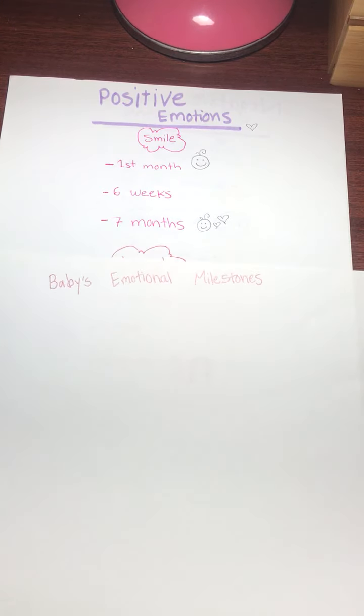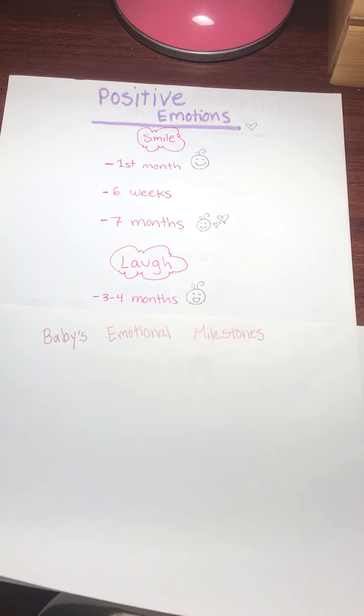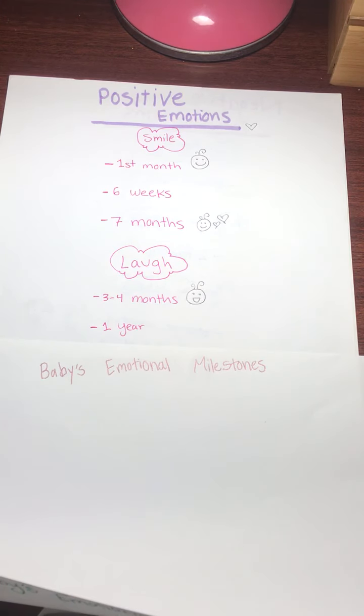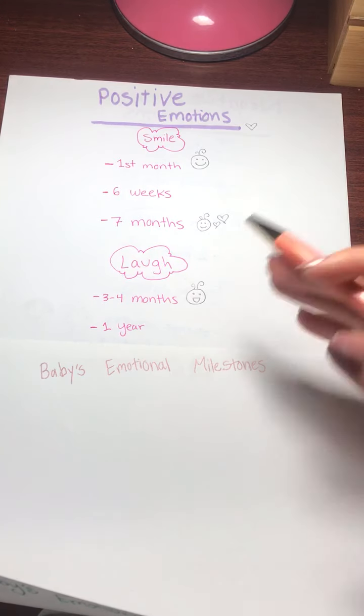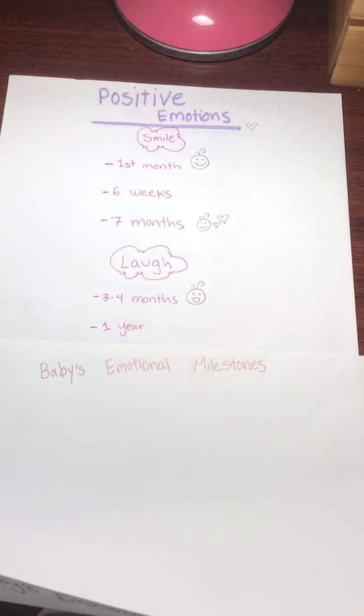Alright, next up is laughing. By about three or four months your baby should engage in laughing during activity or in play. But by one year they should start to laugh at unexpected events. Their laugh should be a response to something. Maybe they're playing with a few blocks and the blocks fall over and they think it's funny and they engage in laughter. Something like that.